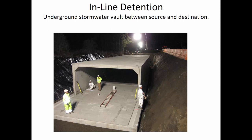The water getting into the inline detention would likely come from storm drain inlets beside a roadway. It wouldn't necessarily have to be under the road, but close enough that the mainline stormwater pipe network feeds into it. That vault filling up is like an underground storage pond, and they may have several of them so it becomes a series of pools.